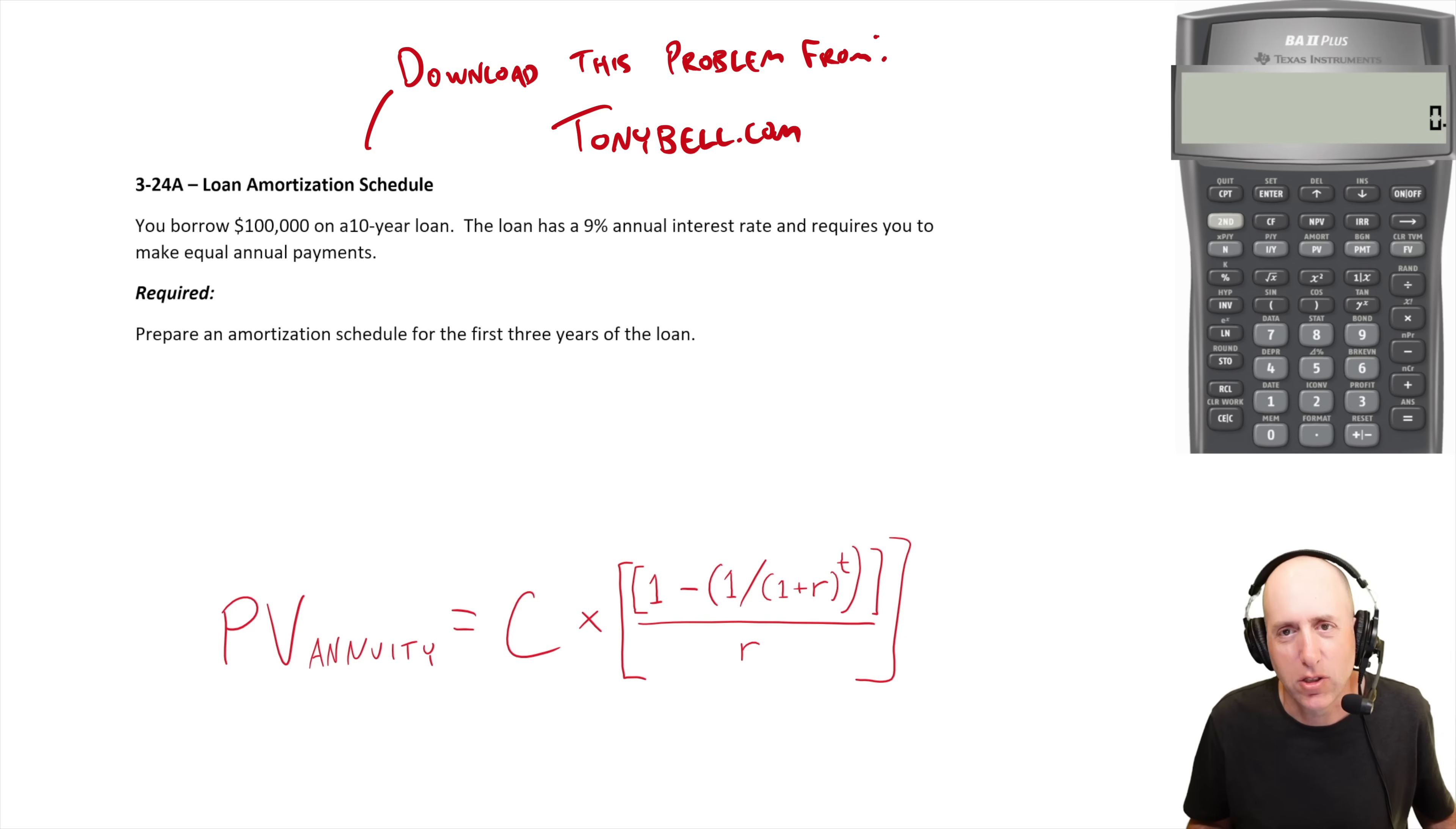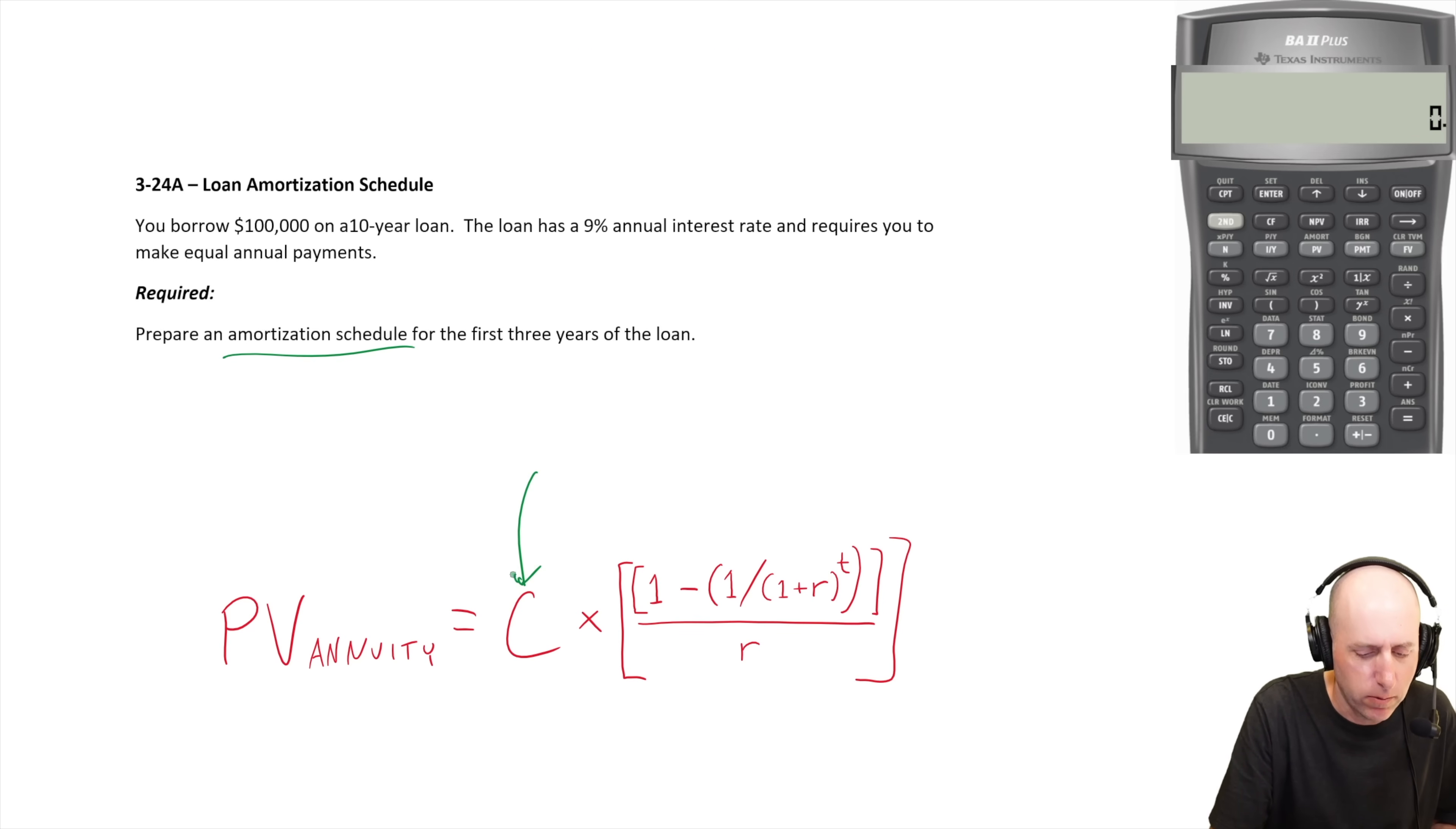I know that they don't tell you how much those equal annual payments are. So for us to do a schedule, we've got to figure out how much the payment is. Before we can do a schedule, we got to figure out what that payment is. So we're going to solve for the payment. If we look at our PV of an annuity formula, we're solving for the regular cash flow. I'll solve it first in the financial calculator, then we'll do it by hand and then we'll prepare our loan amortization table.